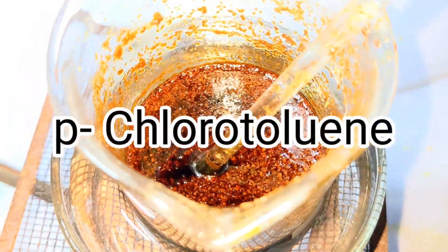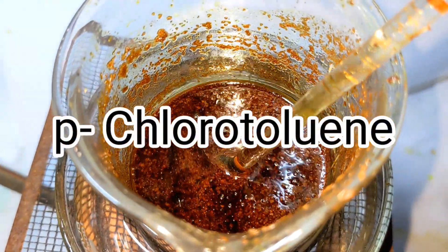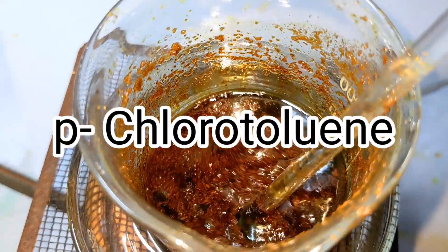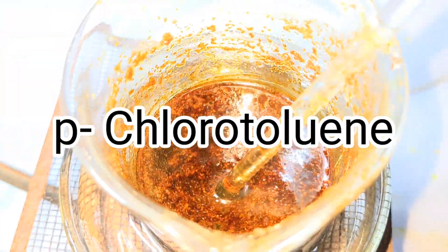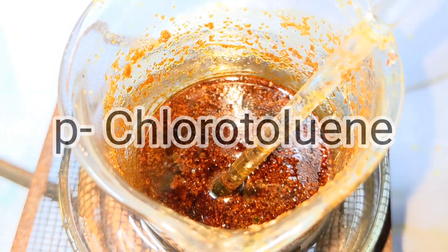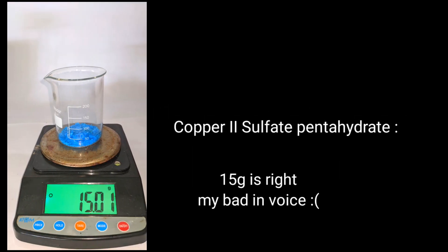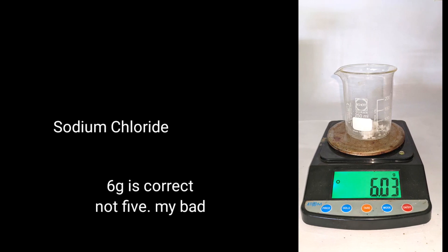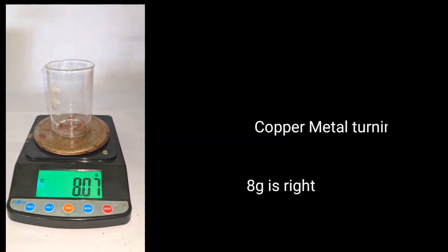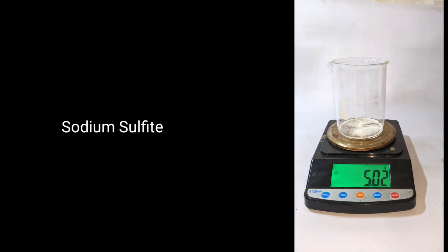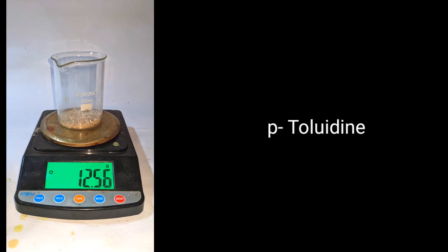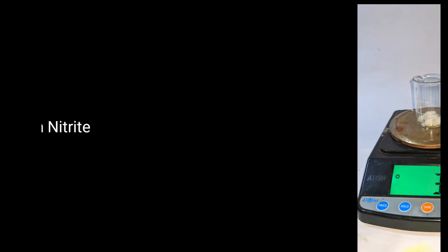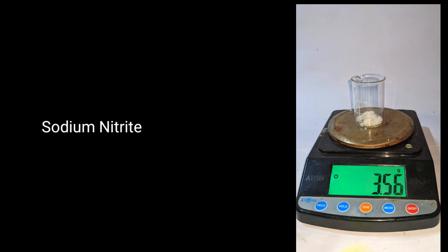Hello friends. In this video, we will be making the compound parachlorotoluene. For this experiment, we will need 10 grams of copper sulfate pentahydrate, 5 grams of sodium chloride, 10 grams of copper metal, 5 grams of sodium sulfite, 12.5 grams of paratoluidine, and 3.5 grams of sodium nitrite.